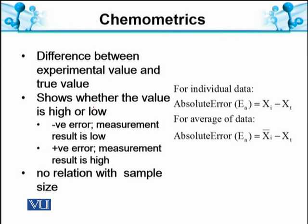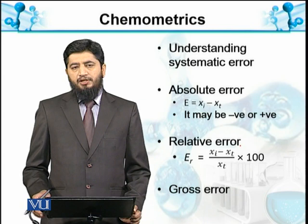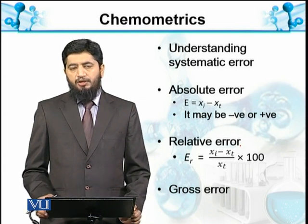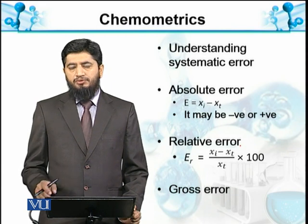Systematic error depends on sample size. Absolute error is explained here: if we take individual readings and subtract the true value — in this case 9.51 minus 10.0 — we get 0.49 ml, which is the absolute error. Alternatively, we can take all individual readings, subtract the true value from each, and average them; or first calculate the mean of all readings and then subtract the true value from the mean. Both are valid methods to calculate absolute error. A better representation is relative error, which relates the error relative to the actual value.